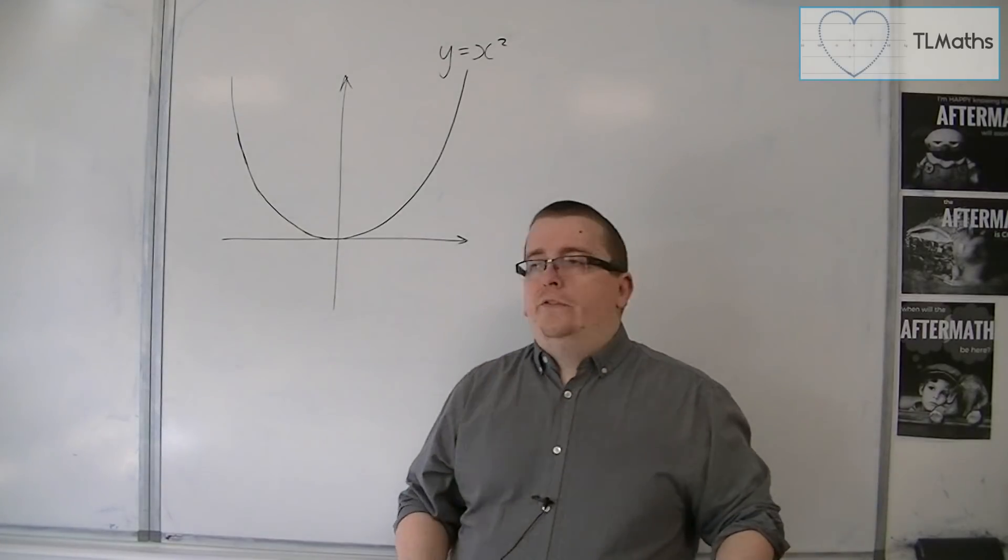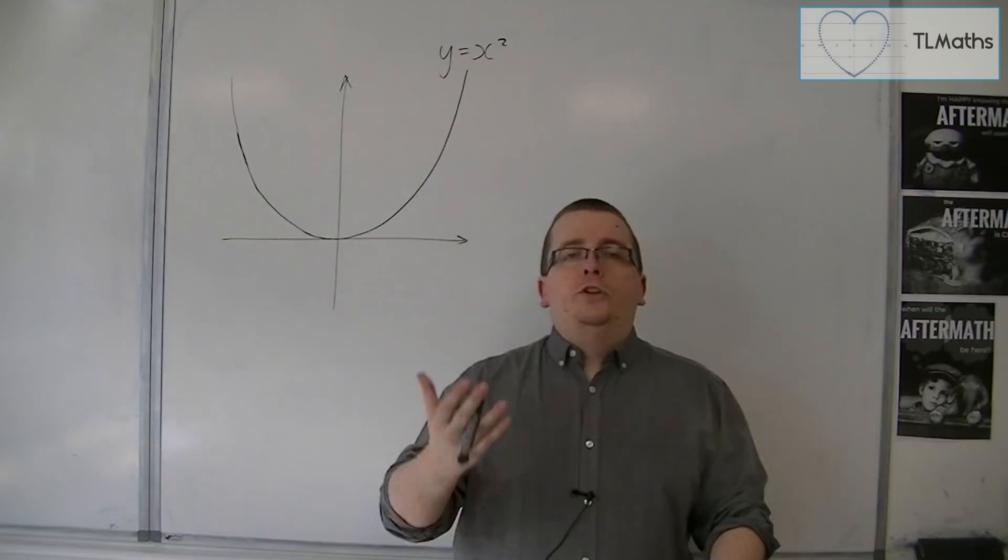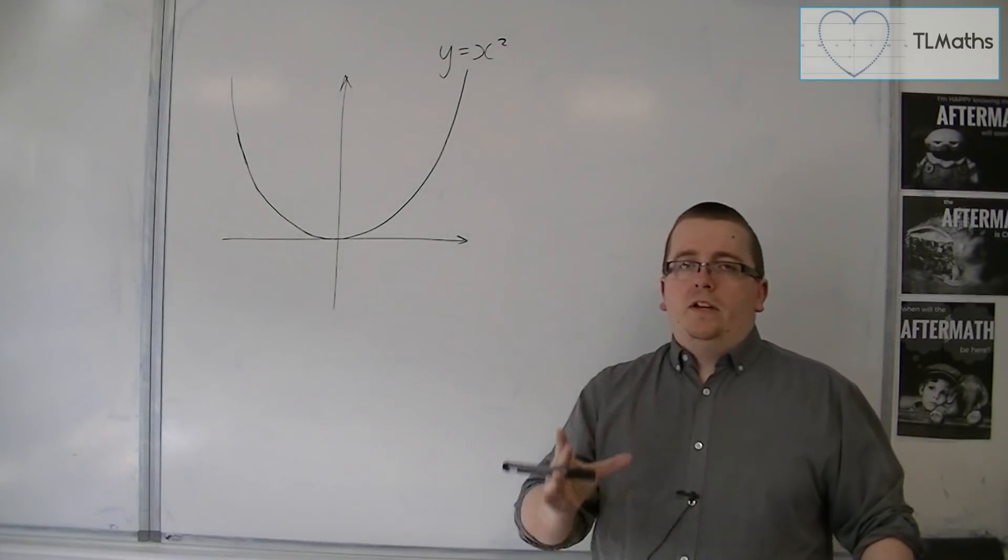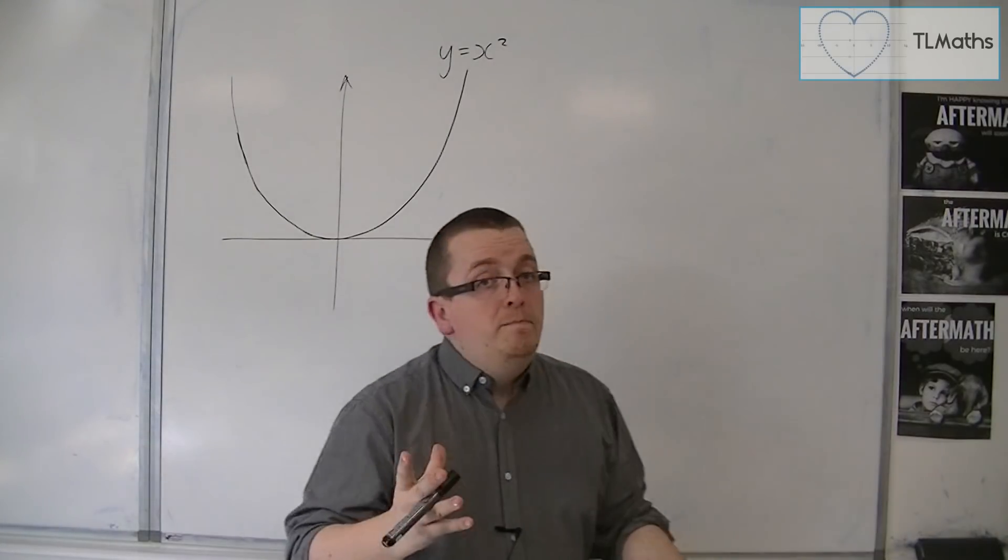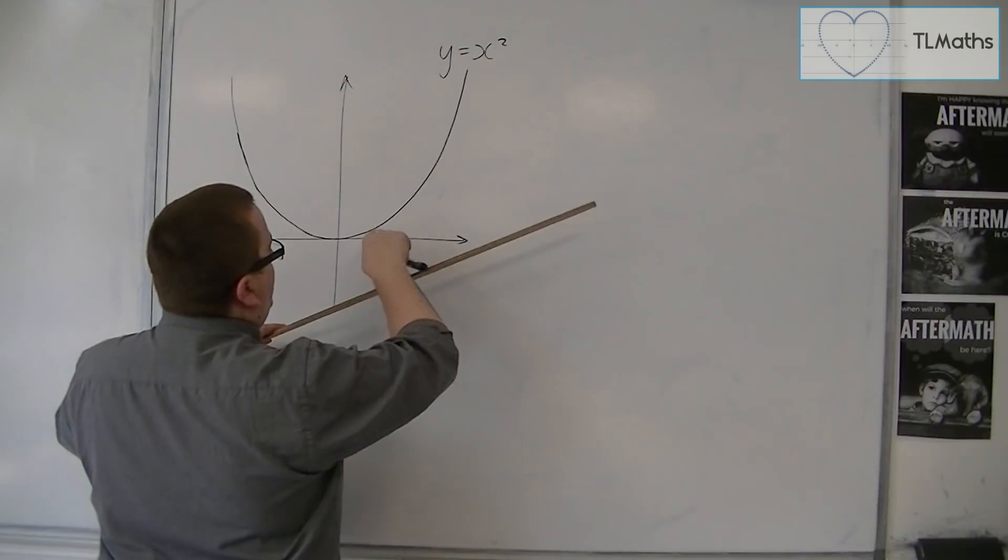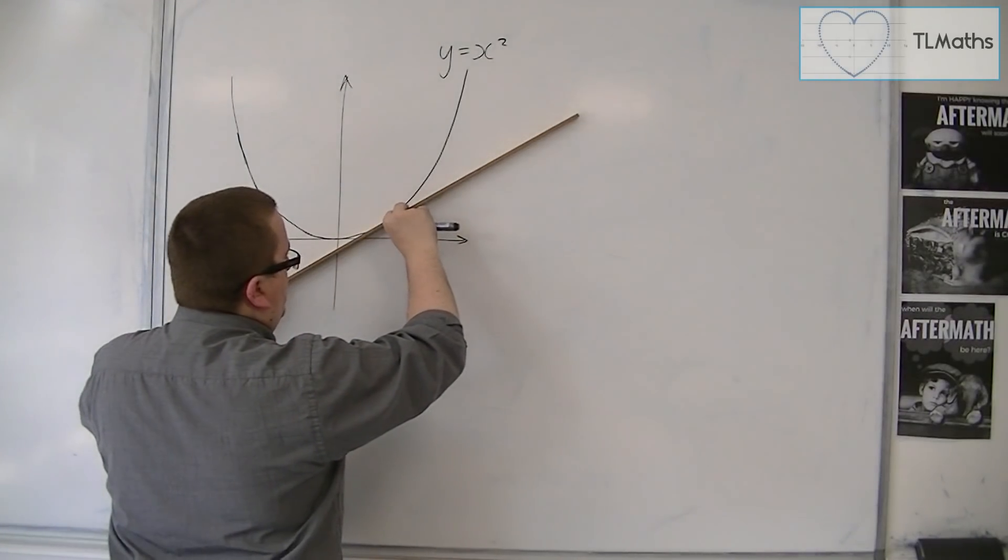But when we move on to curves, so here's y equals x squared for example, you can see that the gradient of the curve changes depending on where you are. What I mean by that is if I look at the gradient at that point there, so if I drew a tangent line, that would be the gradient at that point.